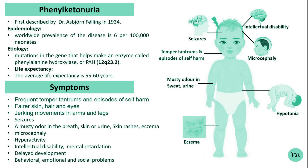Management and therapy for PKU focus on controlling Phenylalanine levels through dietary modifications and other supportive measures. Individuals with PKU need to adhere to a strict, lifelong, low-Phenylalanine diet, which involves limiting or avoiding high-protein foods such as meat, poultry, fish, dairy products, eggs, legumes, and nuts.